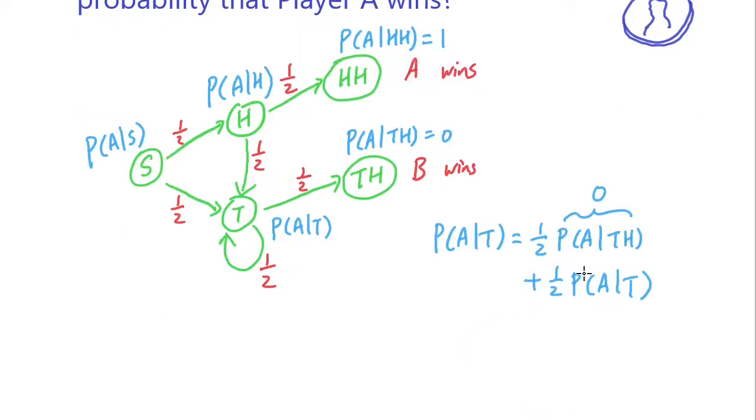We actually know that P(A|TH) is zero. Solving for P(A|T), you see that it's equal to zero. You move it over, one half equals zero, so P(A|T) is just zero. We're going to label it here.